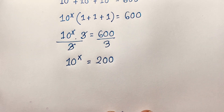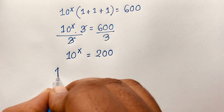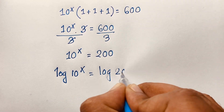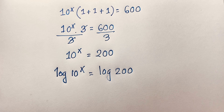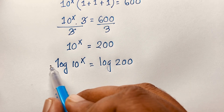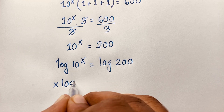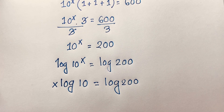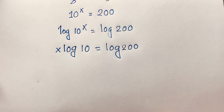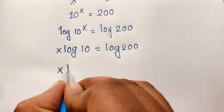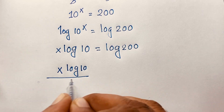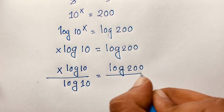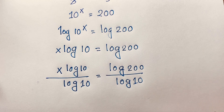Now, I apply log to both sides: log of 10 to the power x is equal to log 200. According to logarithm rules, the x moves to the front, so it will be x times log 10 is equal to log 200. Now, if I divide both sides by log 10, it will be x times log 10 divided by log 10 is equal to log 200 divided by log 10.